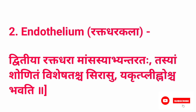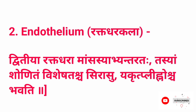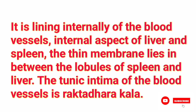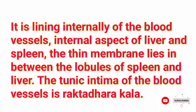Second kala is raktadharakala, correlated to endothelium. Dritiya raktra maasasya bhaantarta, tasya shonitam visheshtascha sirasu, yakrit plinoscha bhavati. It lines internally the blood vessels, and the internal aspect of the liver and spleen. The thin membrane lying between the lobules of the spleen and liver, and the tunica intima of blood vessels, is raktadharakala.